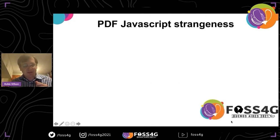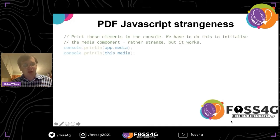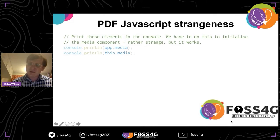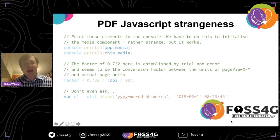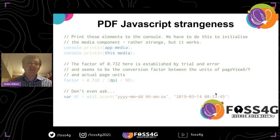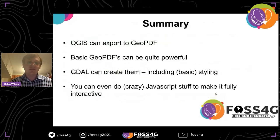There are some very strange things about PDF JavaScript. The API is a bit weird. For example, you have to print a couple of things to the console to initialize the media component, otherwise it doesn't work — no one knows why. Page view units differ from page units, and a conversion factor of 0.732 between them was found experimentally. Date parsing is also unpredictable — every time you run the same parsing function, you get a slightly different result. But in principle it works and gives you amazing interactive applications, remarkably simply.